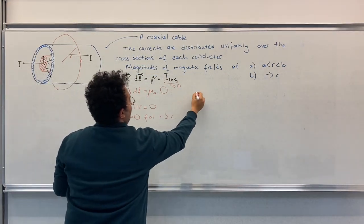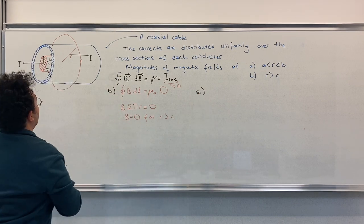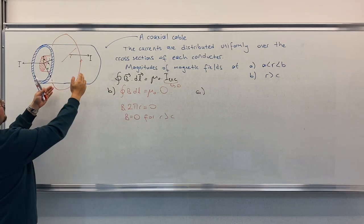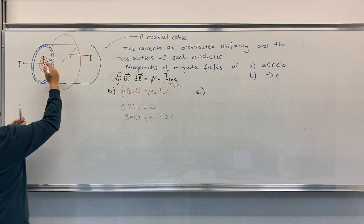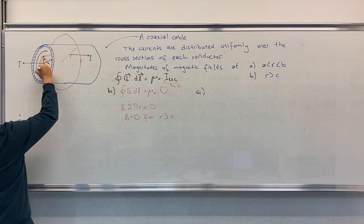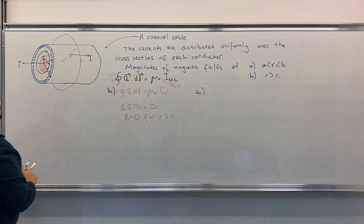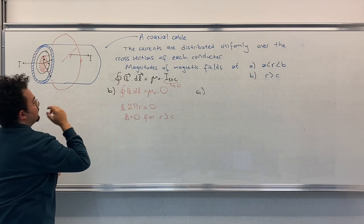For part A, we will pick a smaller circle. For example, like this one. Again, we will use this one now.